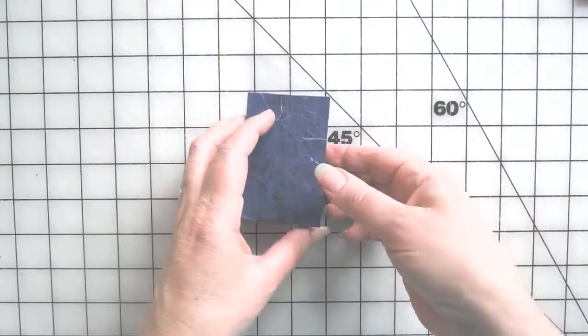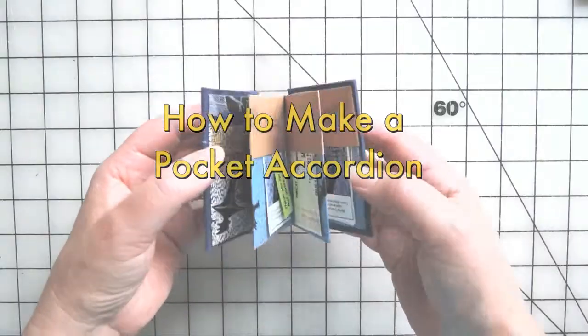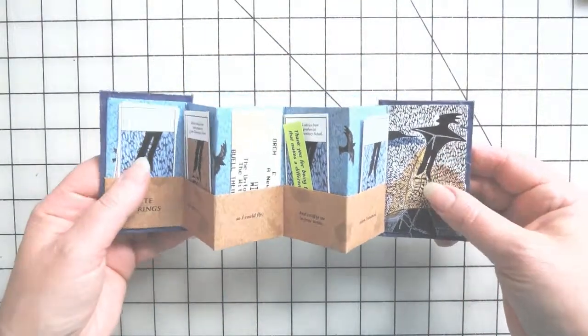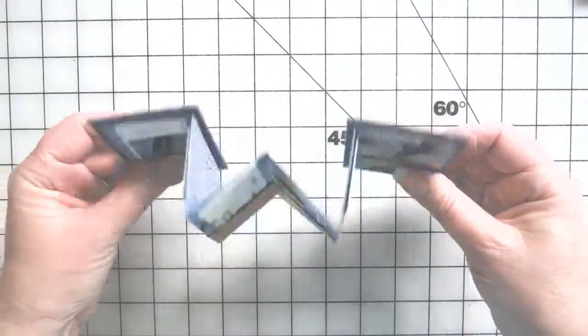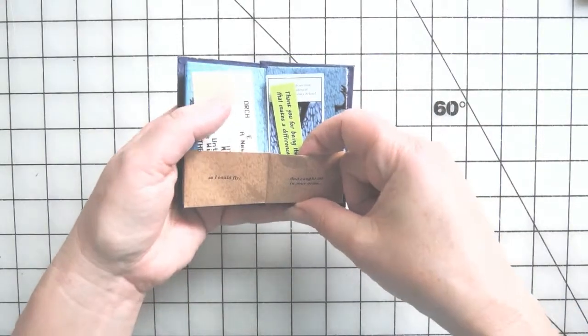Hi, Camille Reiner in the Studio Birds here with another tutorial. This one is a book that I learned how to make through Peter and Donna Thomas's book Making Books by Hand, and it's called a Pocket Accordion. You can see here that each page has a little pocket.